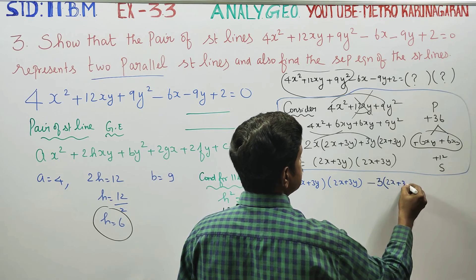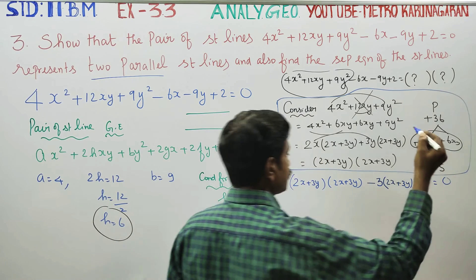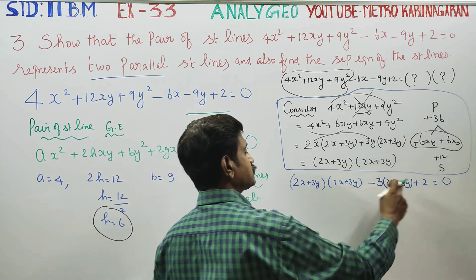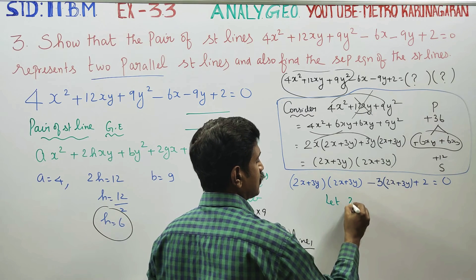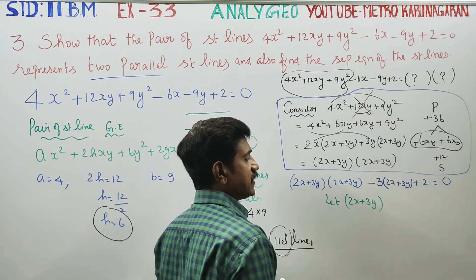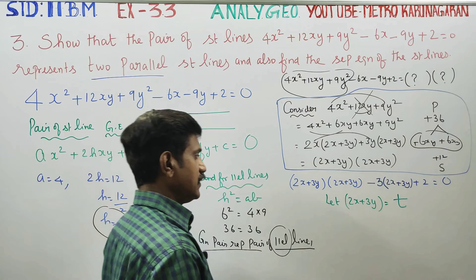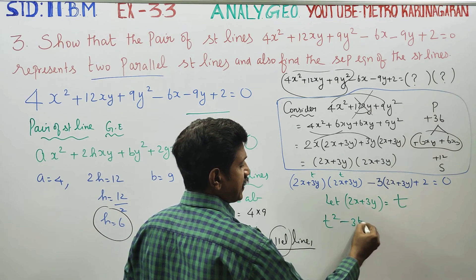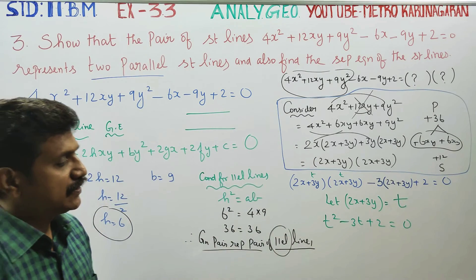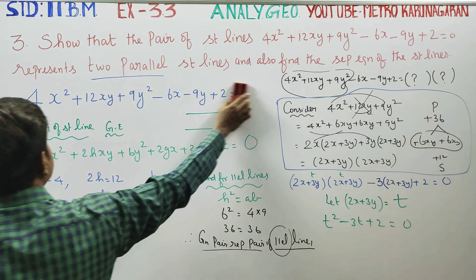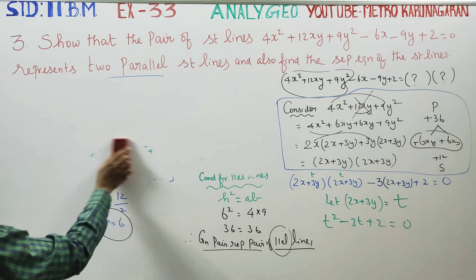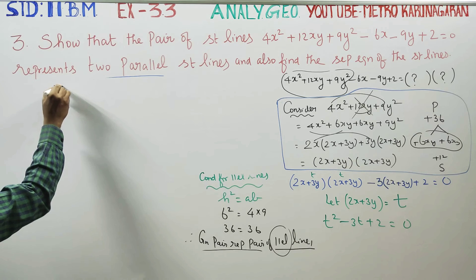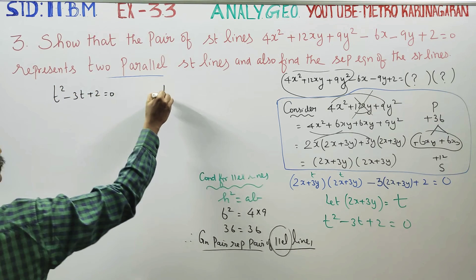Now, taking 3 tables common: the term 2x + 3y appears repeatedly. Let t = 2x + 3y. Writing the full expression in terms of t: t² - 3t + 2 = 0. The product is +2 and the sum is -3.